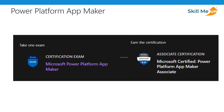If you take up the Microsoft Power Platform App Maker certification and pass the exam, you earn the Associate certification: Microsoft Certified Power Platform App Maker Associate. This exam measures your ability to accomplish the following technical tasks: Design Business Solutions, Create Solutions, and Analyze and Visualize Data.